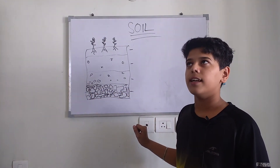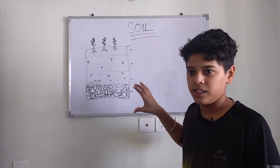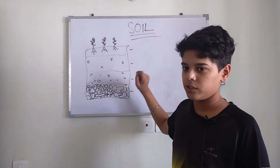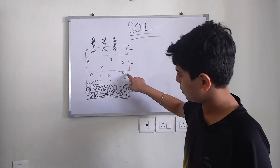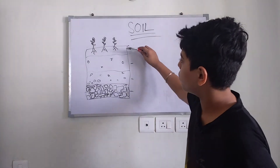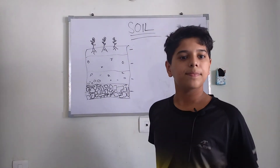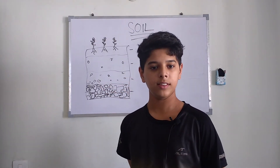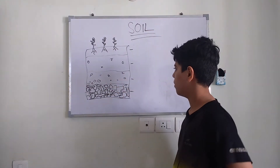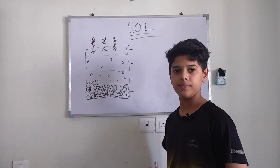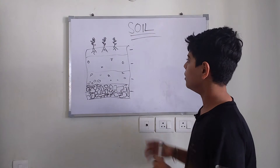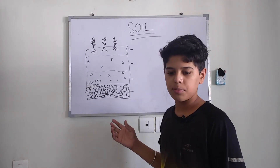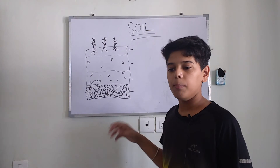A soil profile is what we see when we look at the soil from a sideways direction — we can see all the layers. I have drawn an imaginary line to show the different partitions of the soil. There are not real lines — only imaginary lines, meaning we imagine them. In the first layer there is a substance known as humus.